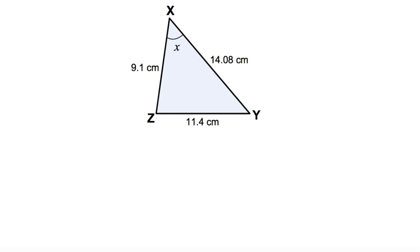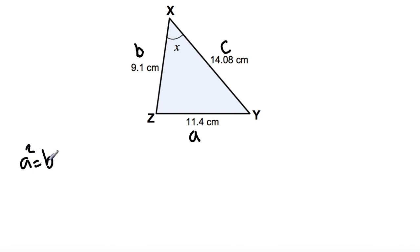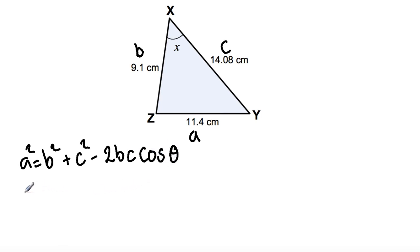Side A is always opposite the angle we require. So in this example, 11.14 cm is A, as it is opposite angle X. I'll label the other sides B and C — it doesn't really matter which way you label them. Now I'll write the cosine rule: A squared equals B squared plus C squared minus 2BC cos theta, and substitute the values given.